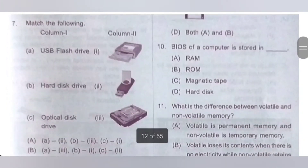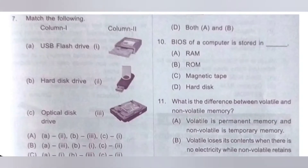Seventh question. Match the following — column 1 with column 2. A) USB flash drive matches to A; B) hard disk drive matches to B3; C) optical disk drive matches to C1. So A to A, B to B3, C to C1. Option A is the correct answer.